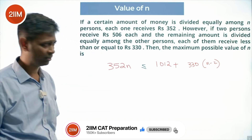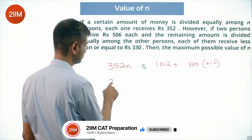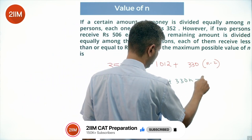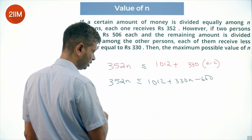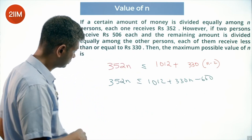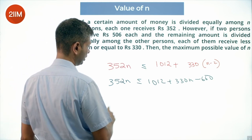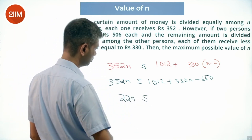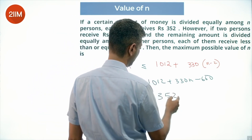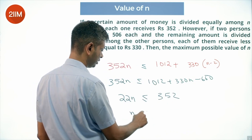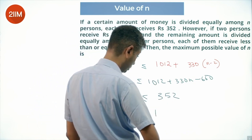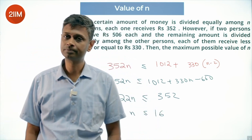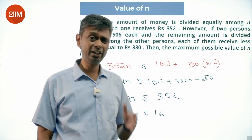So 352n is less than or equal to 1012 plus 330(n minus 2), which gives 352n minus 330n less than or equal to 1012 minus 660. That simplifies to 22n less than or equal to 352, so n is less than or equal to 352 divided by 22, which equals 16. The maximum possible value of n is 16. It's a nice question because 352 divides evenly by 22.